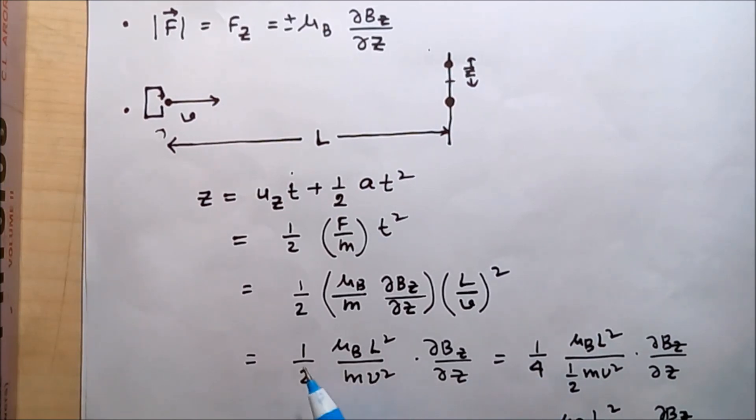If we write the half as one by four divided by one by two, this term equals one by four times mu_B L squared by half m V squared times del B_Z del Z. Since half m V squared equals the kinetic energy, we get one by four times mu_B L squared by kinetic energy times del B_Z del Z.